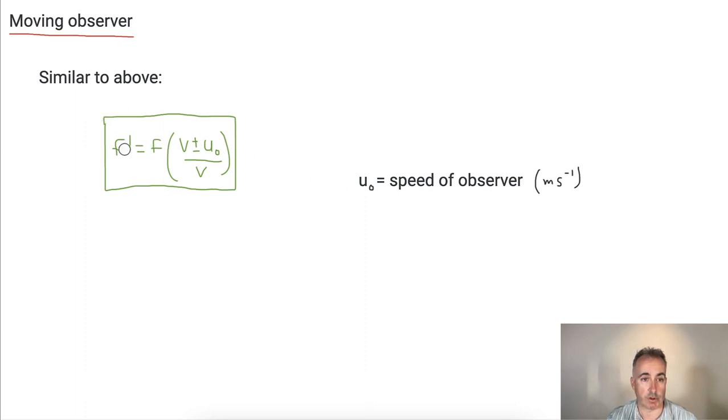Now keep in mind, this works in a similar way. You have to use some logic to figure out, are you going to add or subtract? It depends if you want F prime to be bigger. If you want F prime to be smaller, then make this a smaller number. So do V minus U_O and so on.